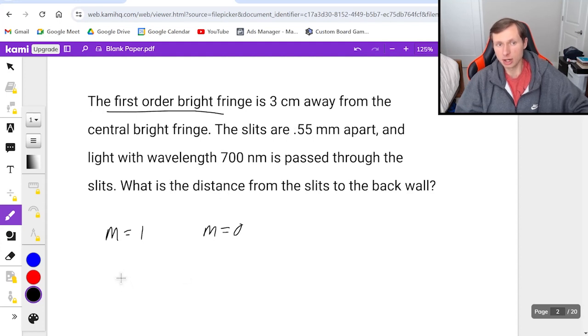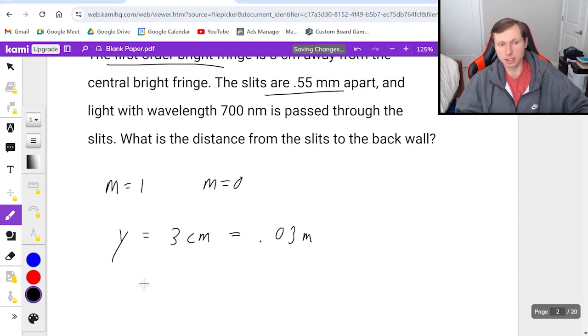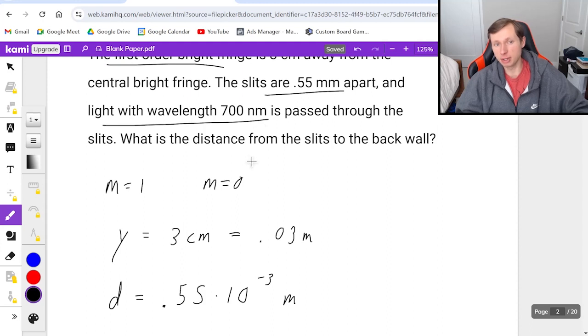Since the first order fringe is three centimeters from the central bright fringe, they're telling us y = 3 cm = 0.03 m. The slits are 0.55 millimeters apart, so d = 0.55 × 10^-3 m.